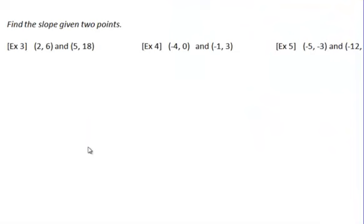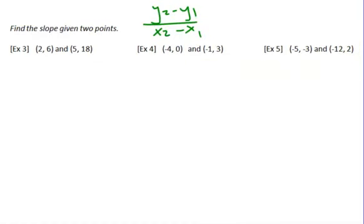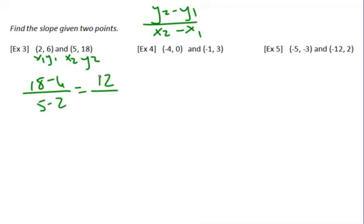Next, find the slope given two points. We're always going to do y2 minus y1 over x2 minus x1. So label this as x1, y1 and x2, y2. It's going to be 18 minus 6 over 5 minus 2. Eighteen minus 6 is 12, and 5 minus 2 is 3. We can't keep it like this — we have to reduce it. Twelve divided by 3 reduces to 4 over 1, or just 4.